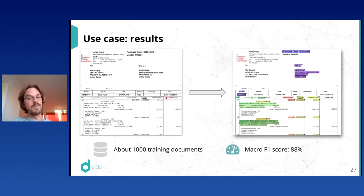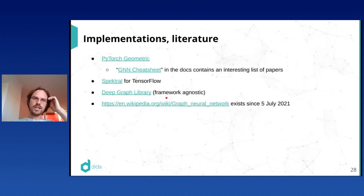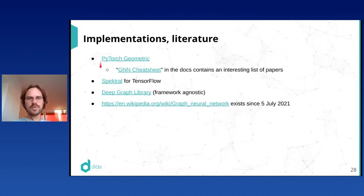It also worked better than an earlier prototype we had developed based on random forests. That was a pretty big success for us. To finish up, there are a few different GNN libraries available, which you can find by searching online.